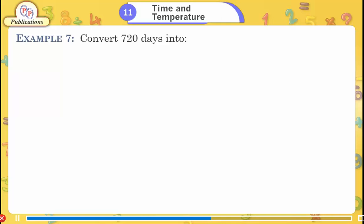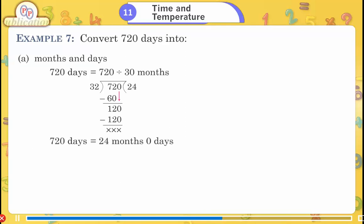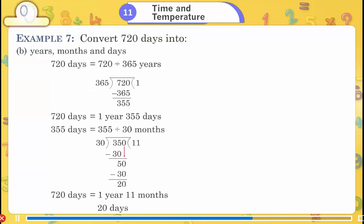Example 7: Convert 720 days. A) Into months and days: 720 ÷ 30 = 24 months, 0 days. B) Into years, months and days: 720 ÷ 365 = 1 year, 355 days remaining.